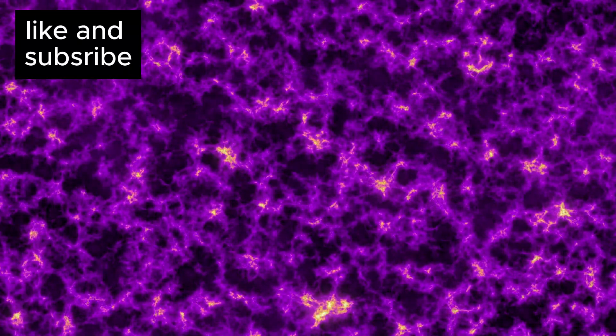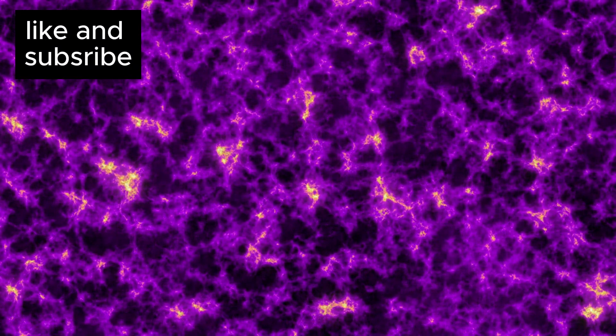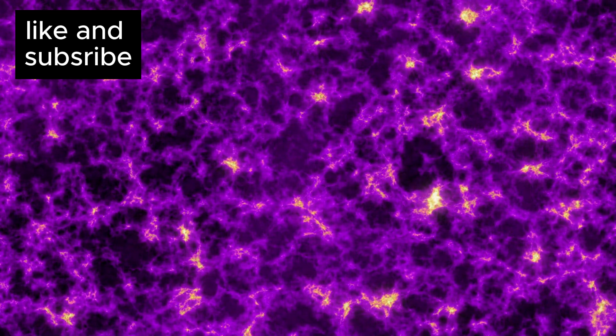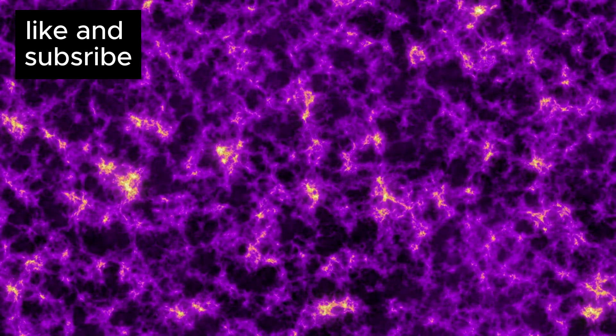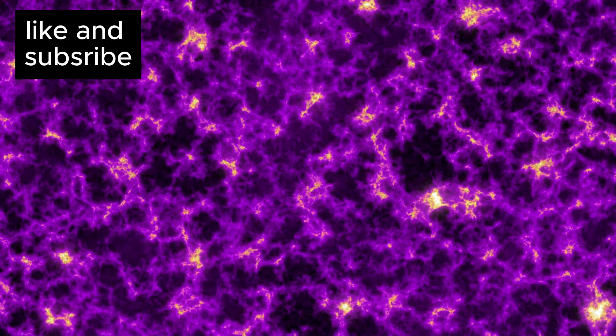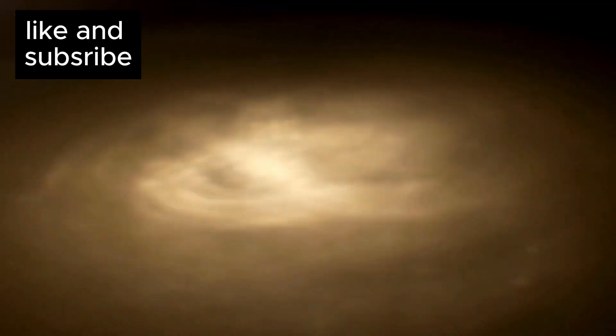For example, the distribution of galaxies at the edge of the observable universe suggests that the vast cosmic web of galaxies, clusters, and voids likely extends far beyond what we can detect. These patterns align with the cosmological principle, a foundational idea in cosmology that suggests the universe is homogeneous and isotropic on the largest scales.